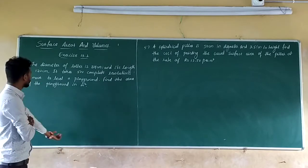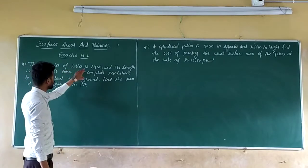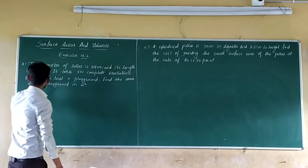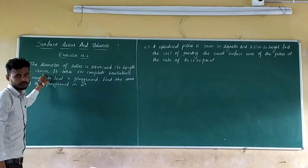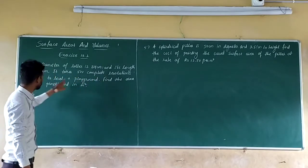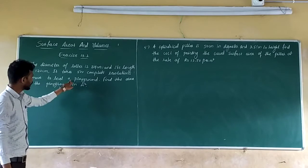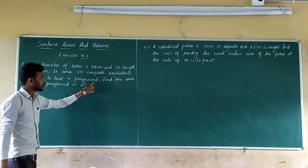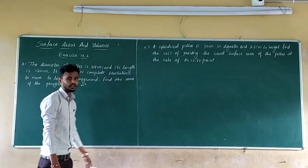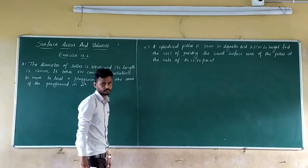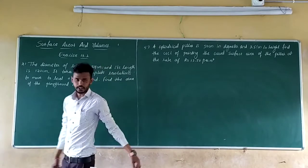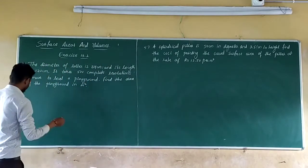The diameter of a roller is 84 cm and its length is 120 cm. It takes 500 complete revolutions to level a playground. Find the area of the playground in meter square. The roller is in the shape of a cylinder.